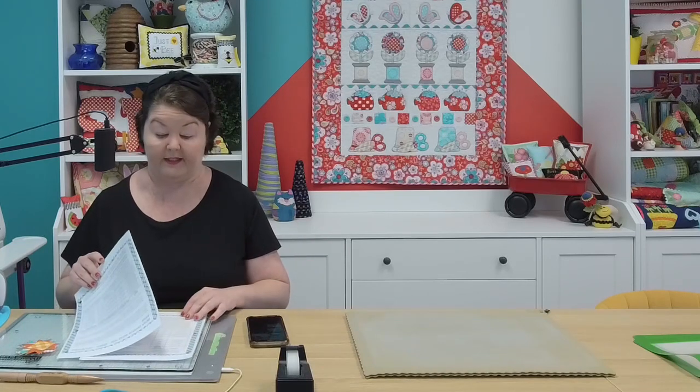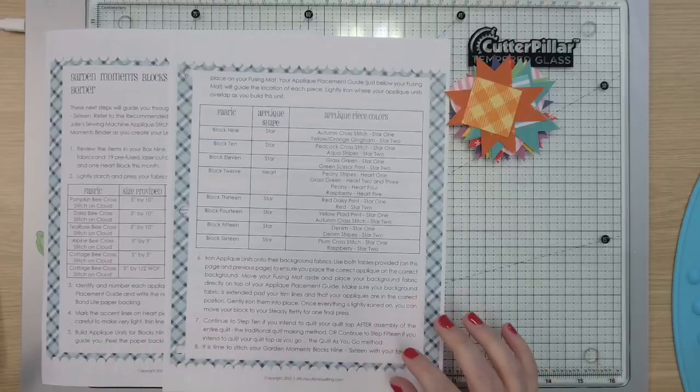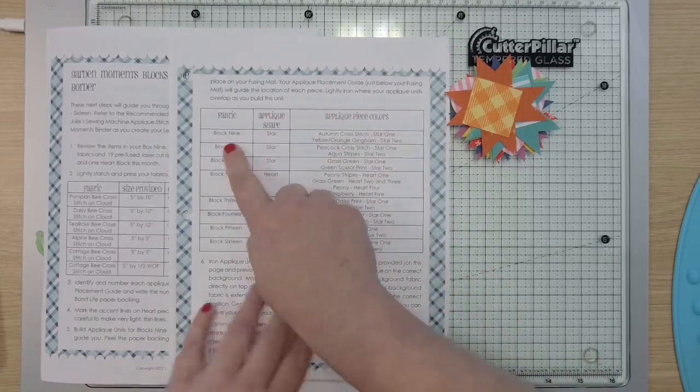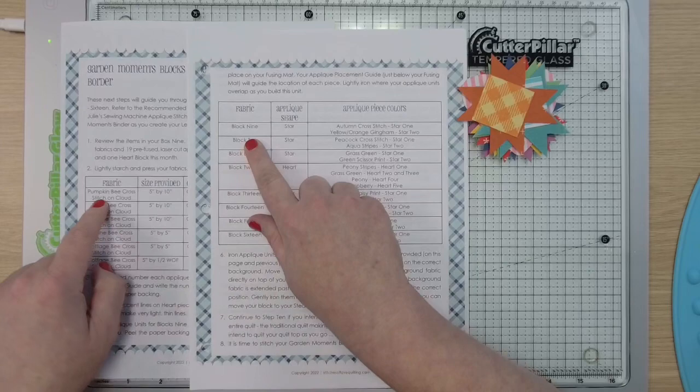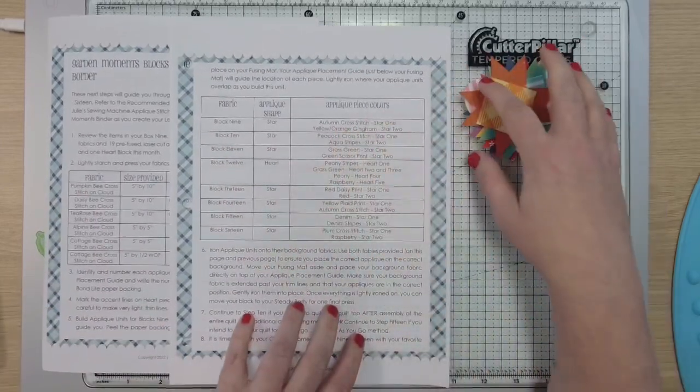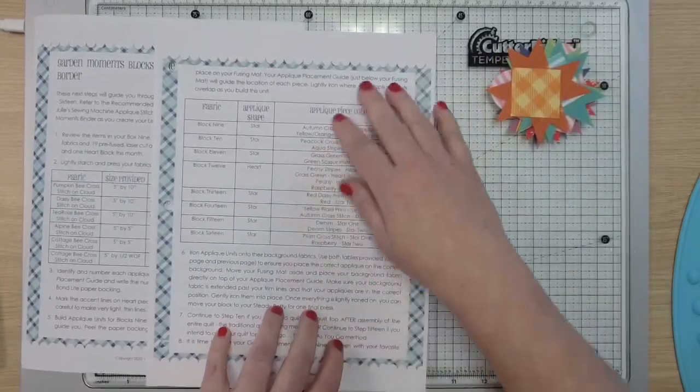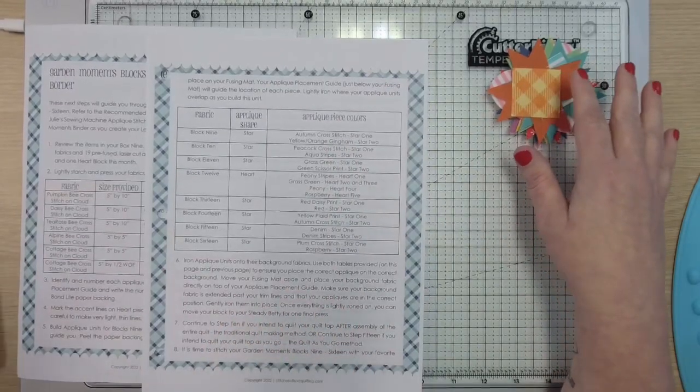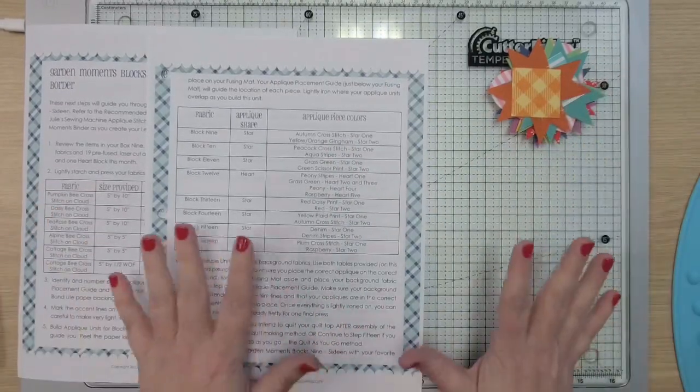So once you have that, then you want to organize your applique pieces. So let's talk about what goes where. Let me flip back to where you can see your pattern. We've organized it per block so you know what your background fabric is and over here we're telling you what applique piece goes where. So I'm just going to review the names of these colors to make it easy for you and then after that, to be honest, the stitching is so easy this month for you.